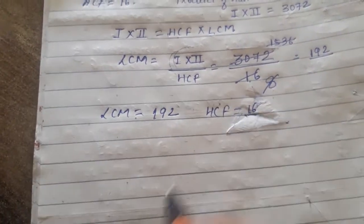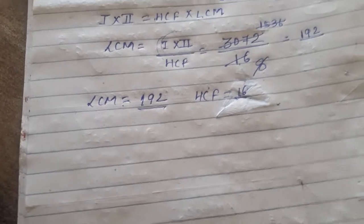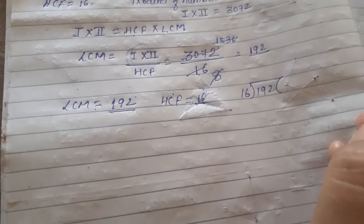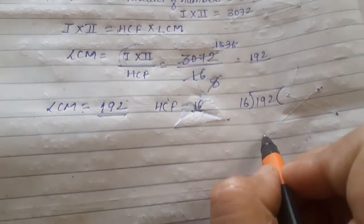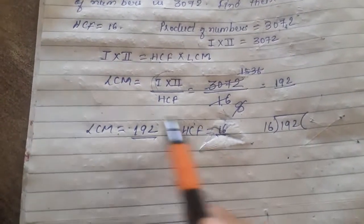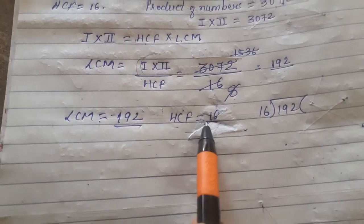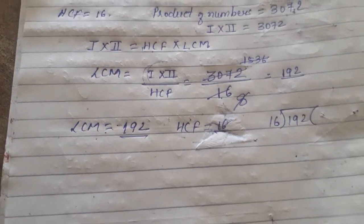HCF in the question was given as 16. LCM came out to be 192. If you divide 192 by 16, it will be a complete division. If we are getting remainder 0, means we did the calculation correctly. Because we learned a property that HCF should always be a factor of LCM.